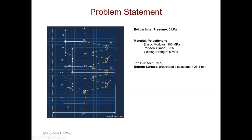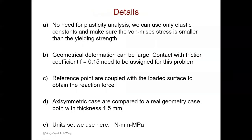The boundary condition we are going to use is: for the top surface, we fix the bellow; and for the bottom surface, we apply a prescribed displacement of 25.4 mm, which is 1 inch. Before going through the Abaqus GUI, we can go through some details. First, there is no need for plasticity analysis — we can use only elastic constants and make sure the maximum von Mises stress is smaller than the yielding strength. It is up to your design requirement; sometimes you can add a safety factor.